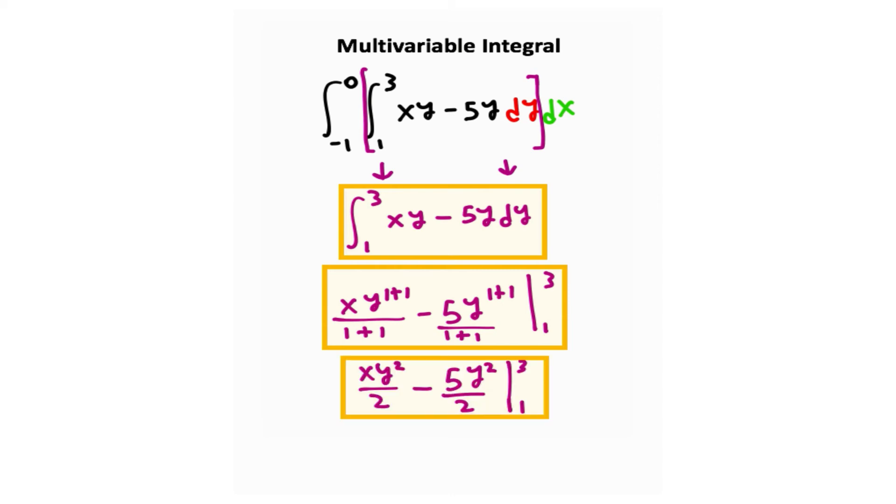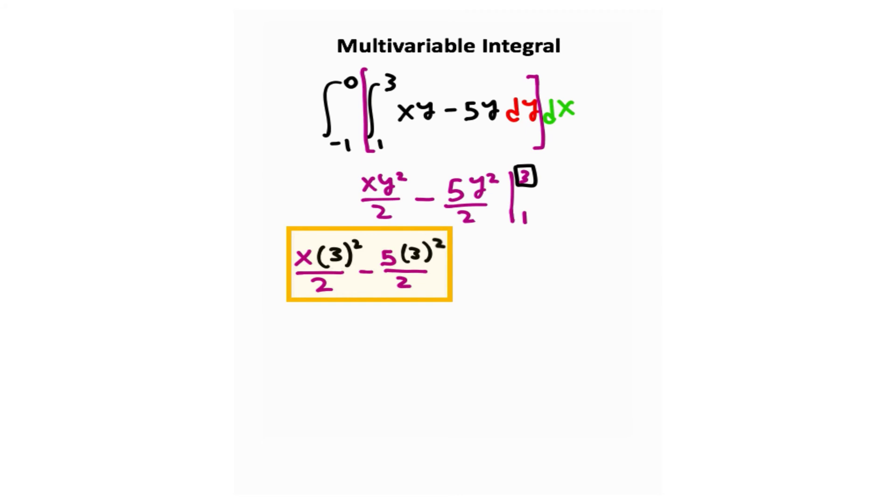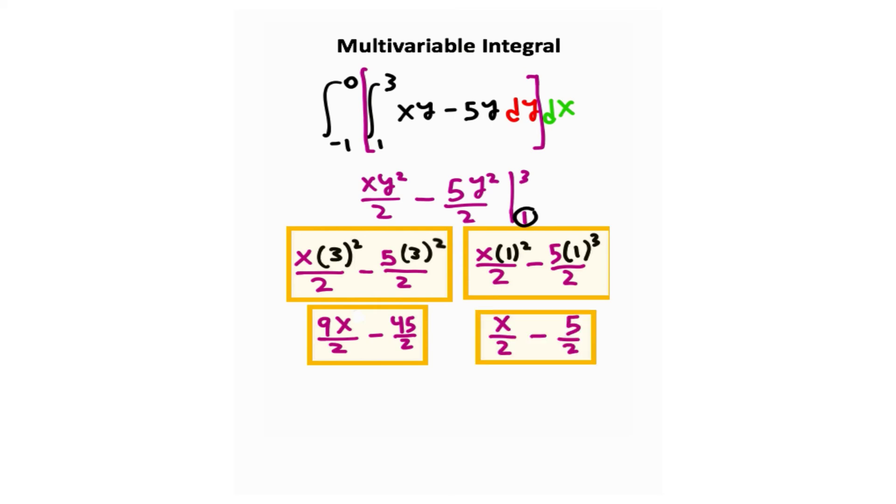And now I want to take my terms and I want to plug them in. So first off, I want to take that 3 and plug it in for every place I see y. And from here, I can simplify these terms. Now I want to take that 1 and plug it in for every place I see y. And here I can simplify those terms as well. So on the left side is where I plugged in with 3 as my bound. And here's where I plugged in everything with 1 as my bound. Now I just need to subtract the lower bound from the higher bound. And that's going to give me this result.